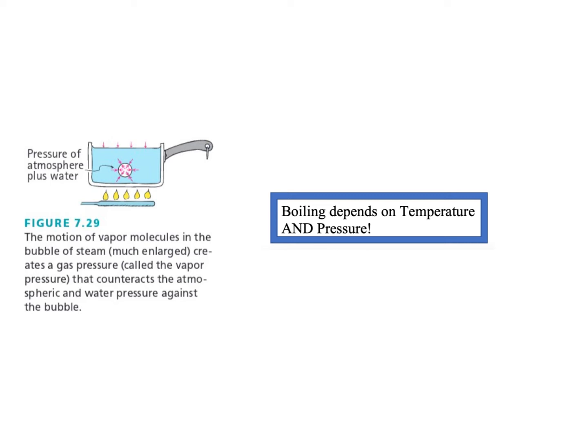To make water boil, you have to put in a lot of heat — but you could also take away a lot of pressure. In a famous demonstration, you could take a pot of water, enclose it in a glass dome, and suck all the air out. As the atmospheric pressure gets less and less, room temperature would be enough to heat the water up to the boiling point. You can actually boil room temperature water just by removing the air.